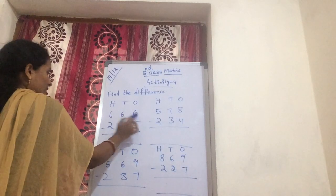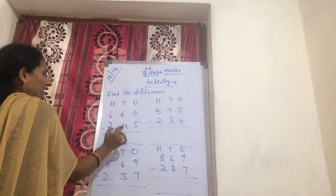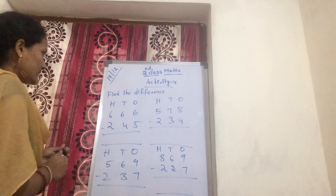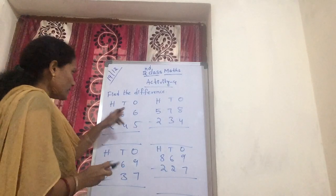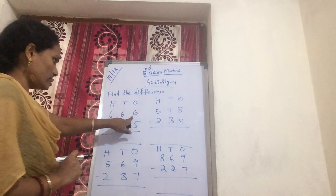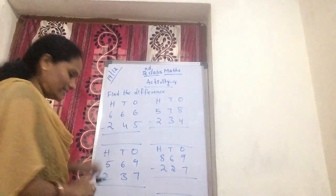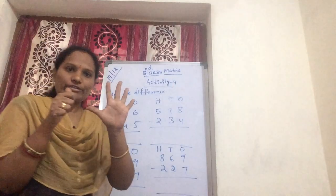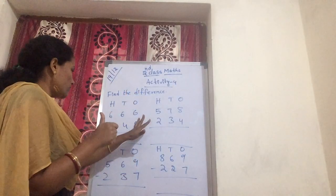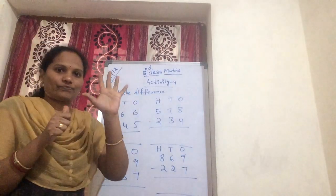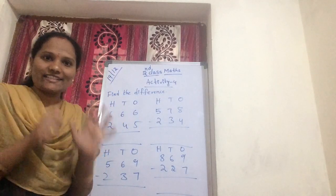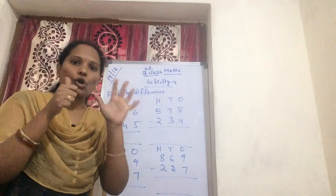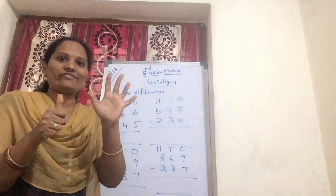So 666 minus 245. Now coming from ones. First number is a 6. Now show this 6 on your fingers. Minus means it's removing. So 5 — you are removing how many fingers?